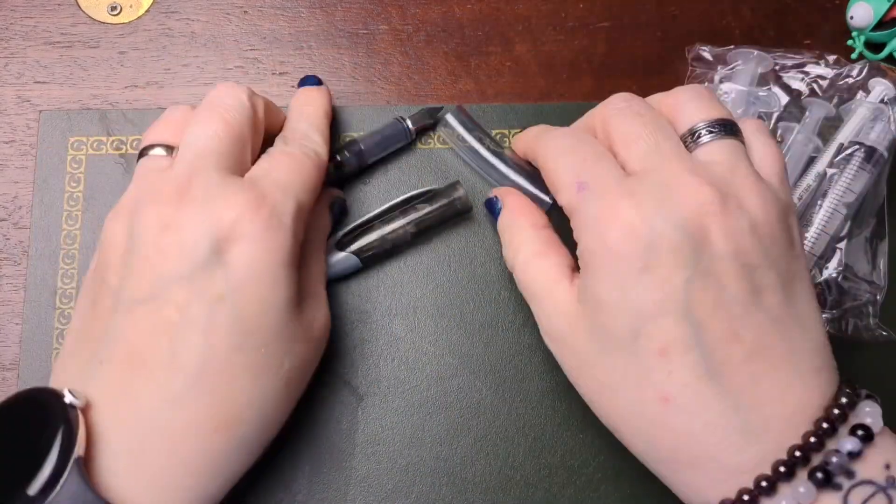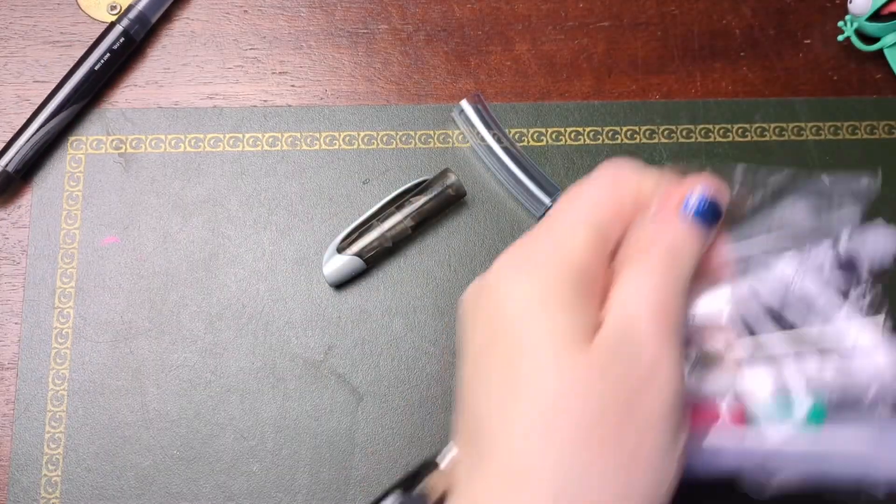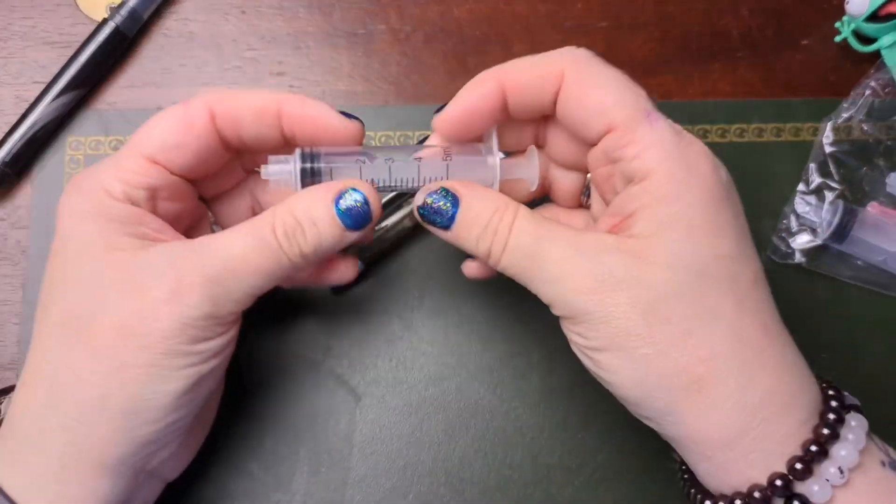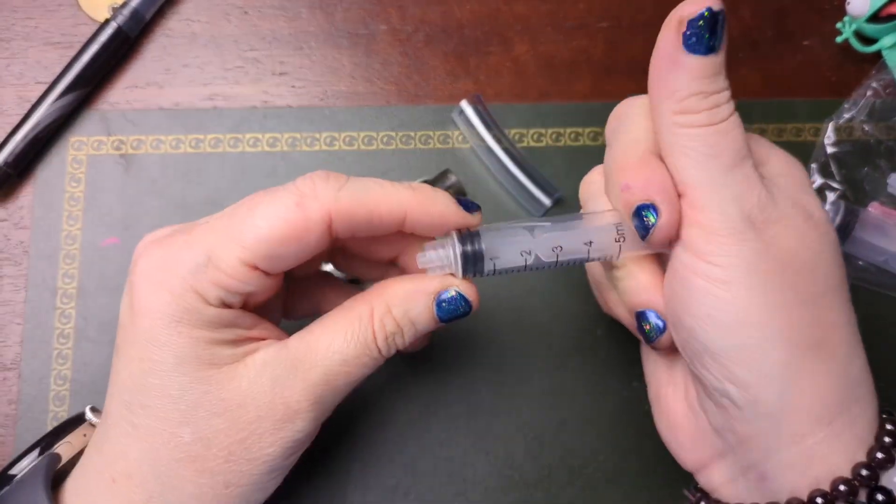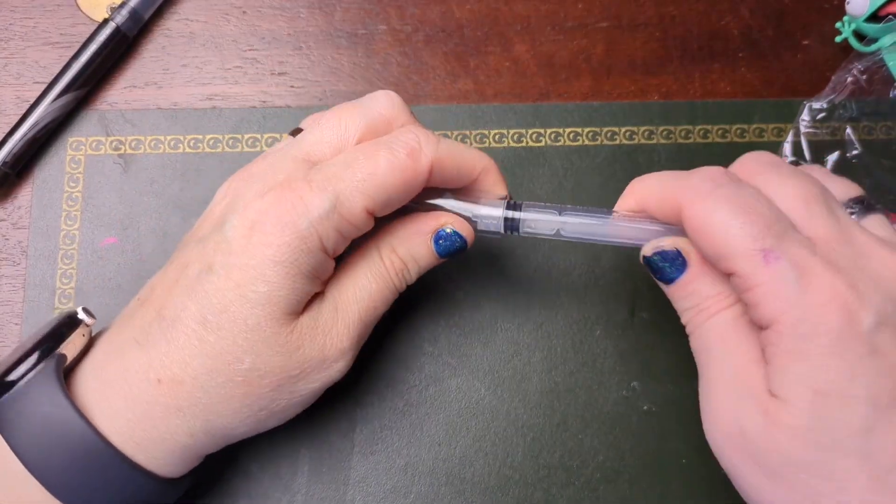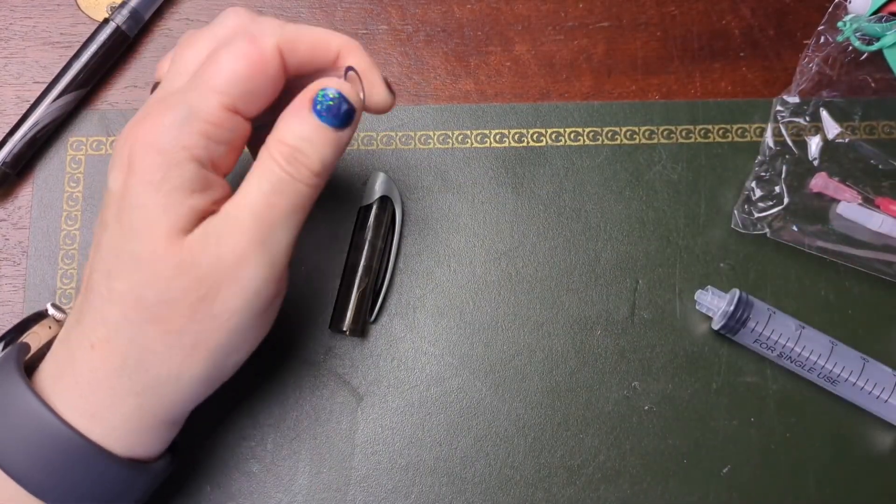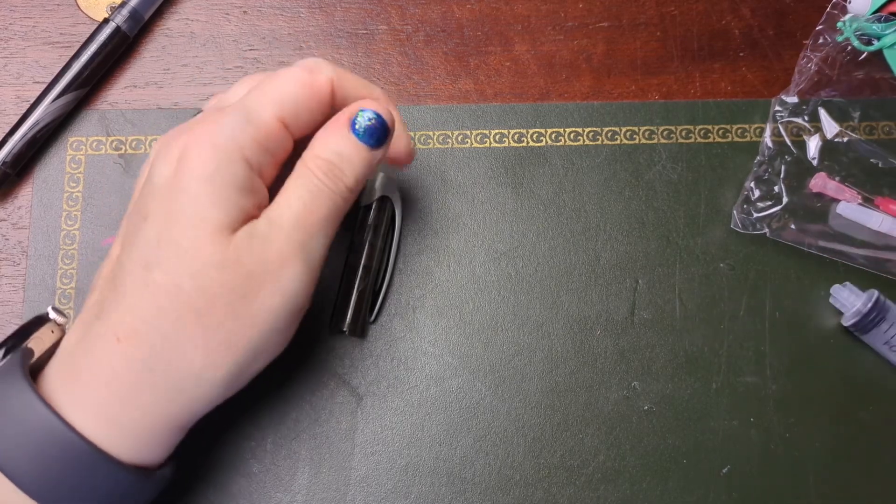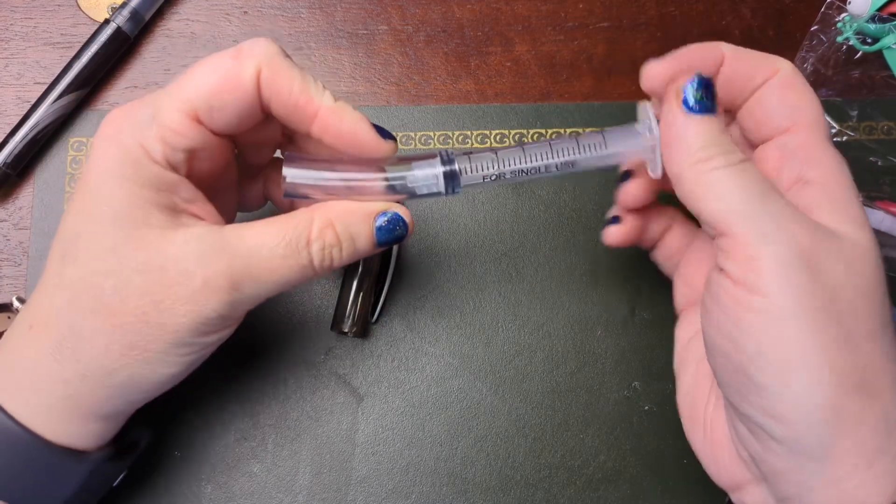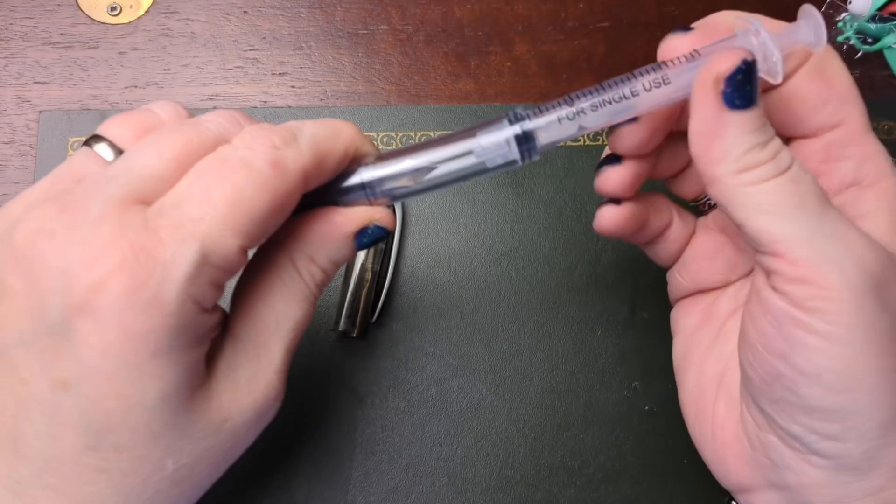What you need is some ink syringes. These are specifically for ink so they don't come with sharp needles or anything. This needs to be able to fit onto the end of the tubing, and all of mine are slightly too big, too small. Oh there we go. So that fits onto the tube like so, and the pen is going to go on the pen like so.